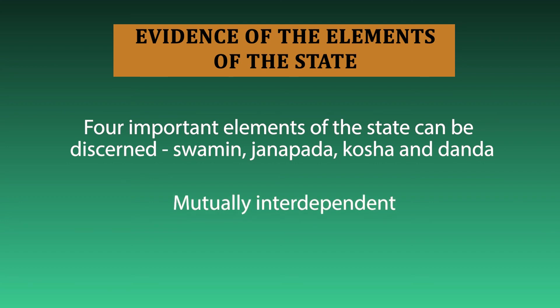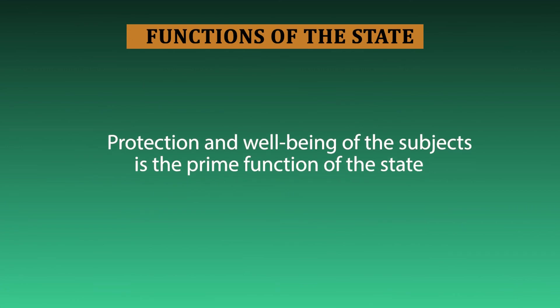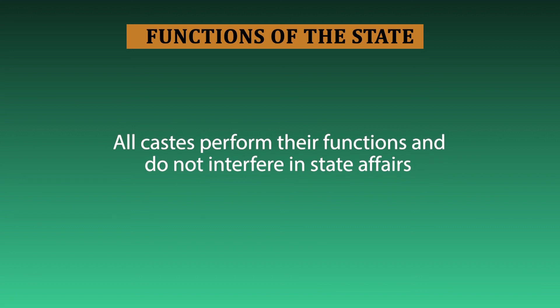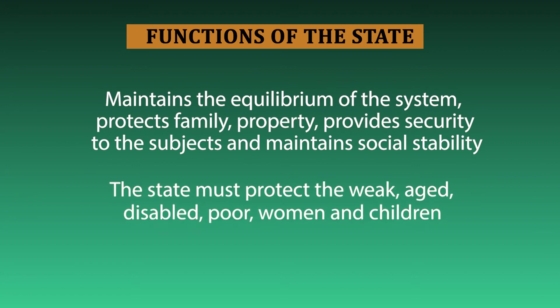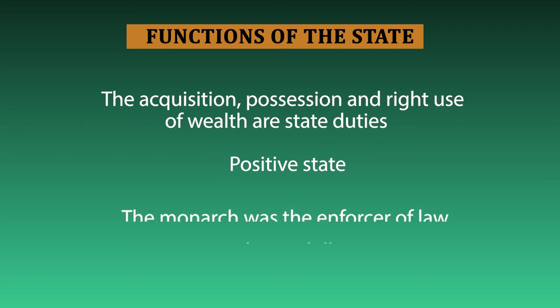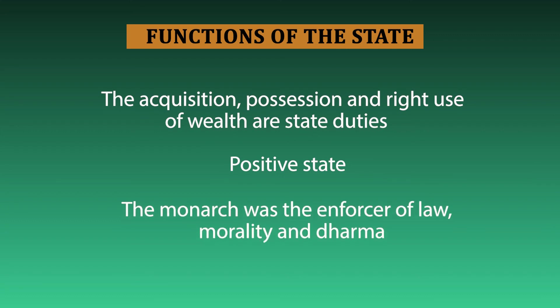All elements were mutually complementary to each other. The functions of the state elaborated in the Shanti Parva included: protection and well-being of the people as the basic function; social welfare — catering to the weak, disabled and marginalized; ensuring that each caste could perform their respective functions; maintaining the equilibrium of the system; protecting family and property; and the acquisition, possession and right use of wealth. The state in the Shanti Parva was a positive state, and the monarch was the enforcer of law, morality and dharma.